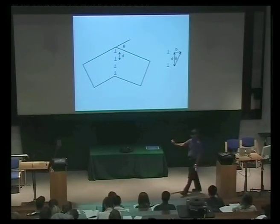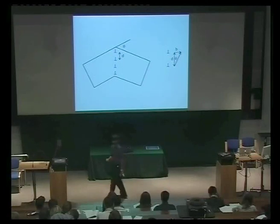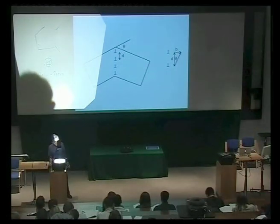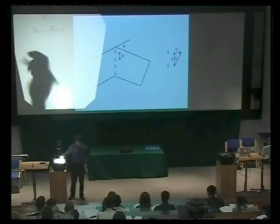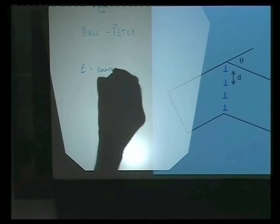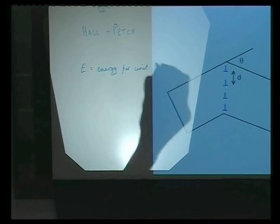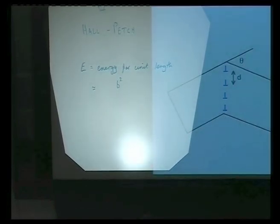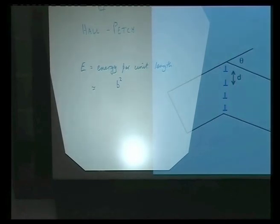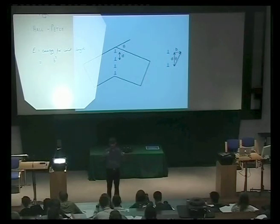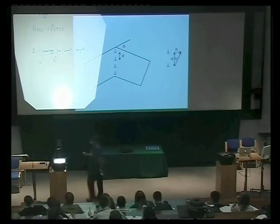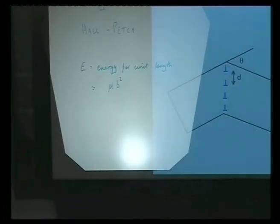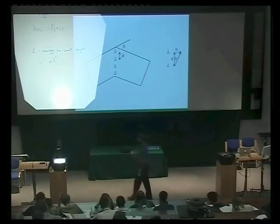A dislocation is a defect and has a particular energy per unit length. The energy per unit length E scales with the Burgers vector squared. The elastic property that influences dislocation energy is the modulus — the stiffer your material, the greater the energy. So the energy per unit length scales with the elastic modulus times the square of the Burgers vector.